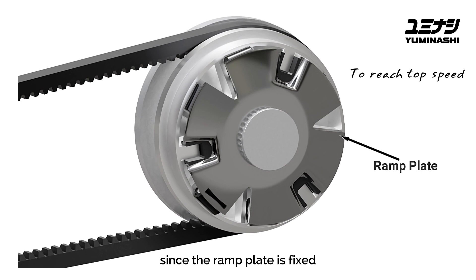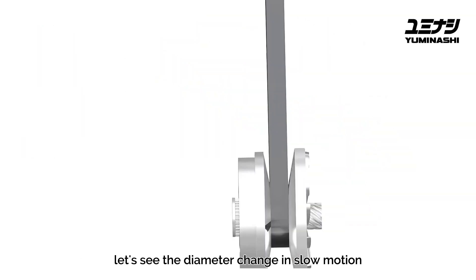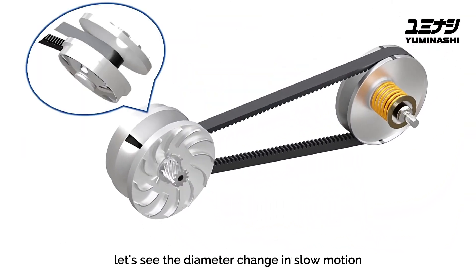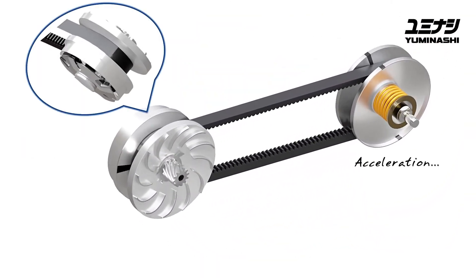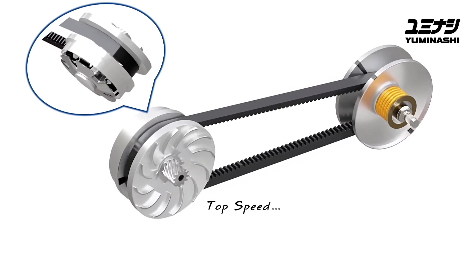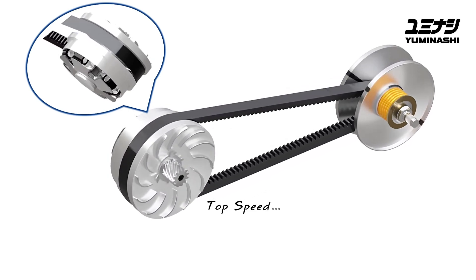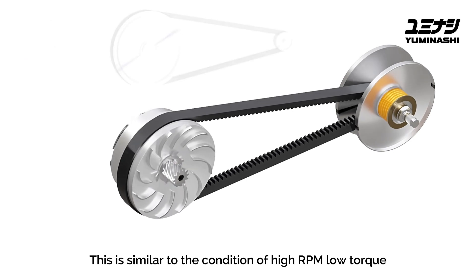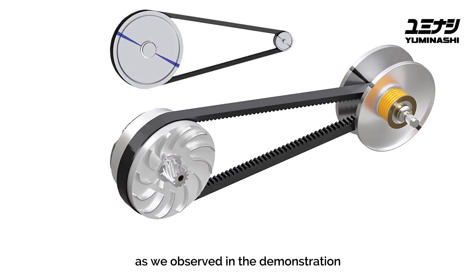Since the ramp plate is fixed, the sliding conical plate is forced towards the other plate. Let's see the diameter change in slow motion. This is similar to the condition of high RPM, low torque, as we observed in the demonstration.